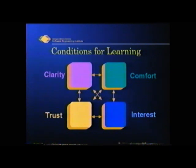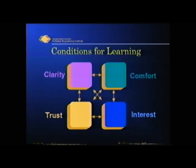You see those arrows in there? What they should be pointing to is the fact that all of these interact. Let's take, for example, the opposite of these conditions — what educators usually like to call locks. The opposite of clarity is what?